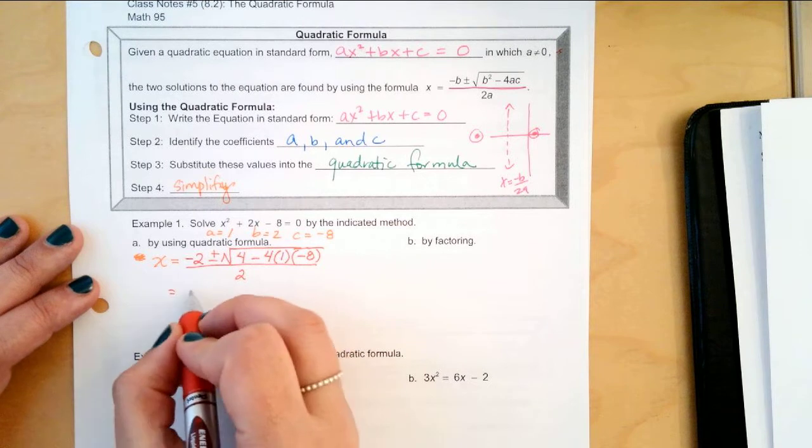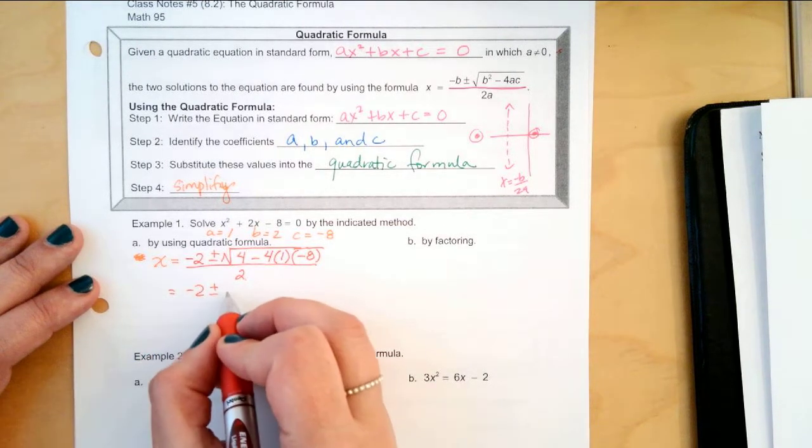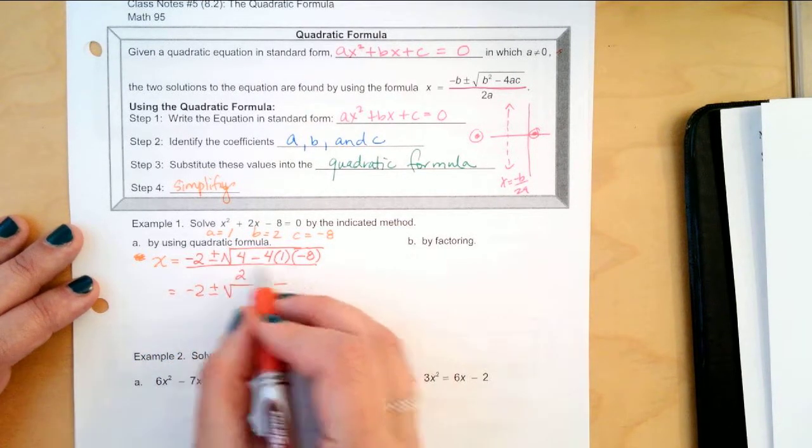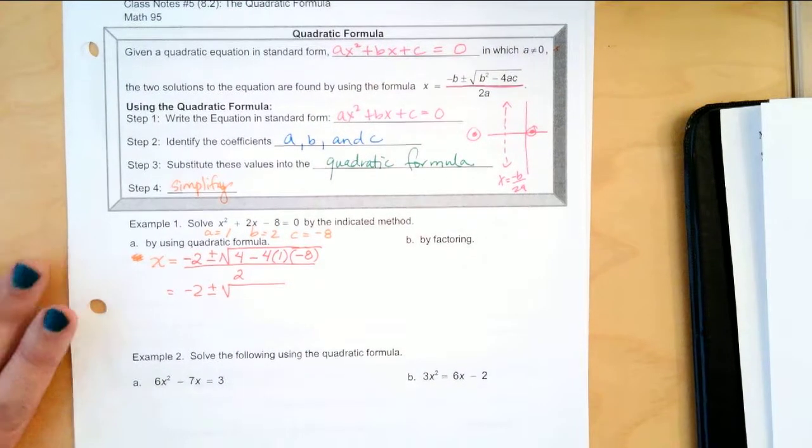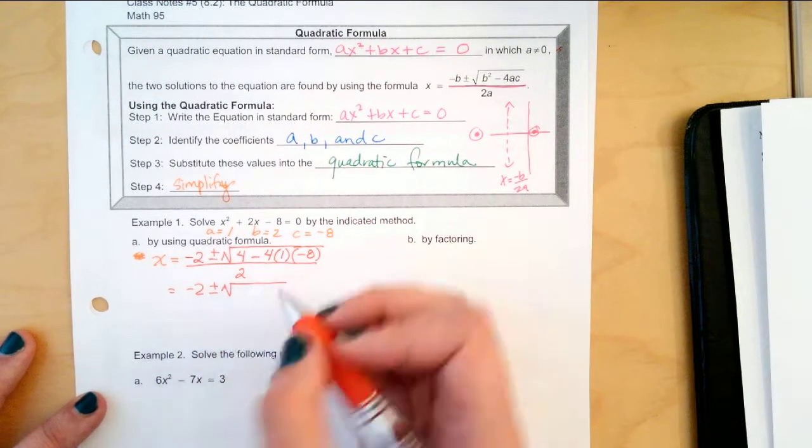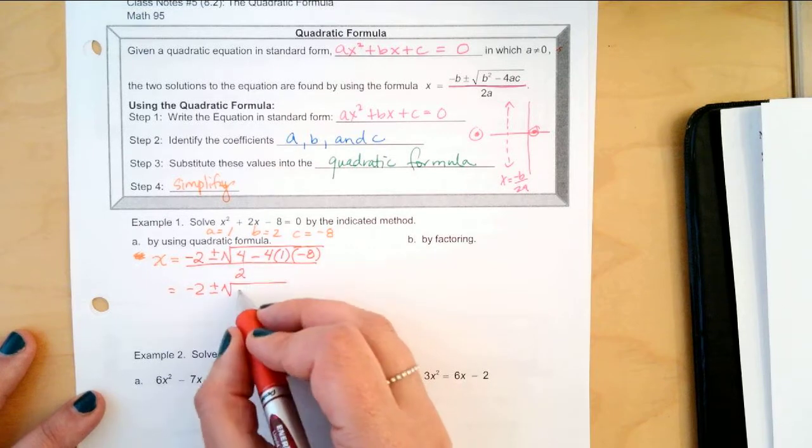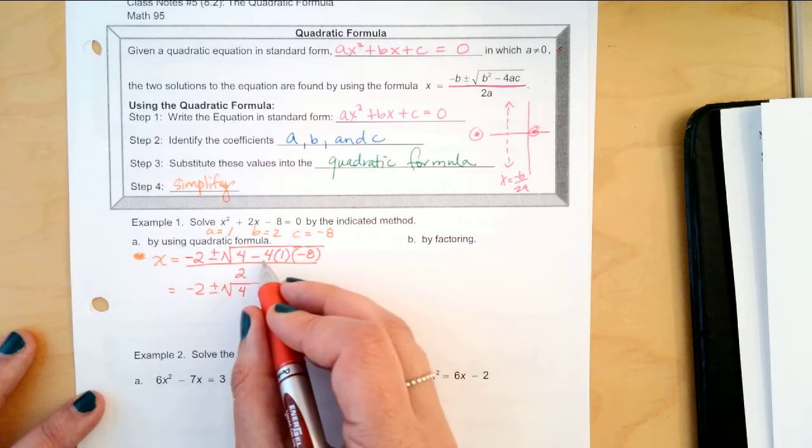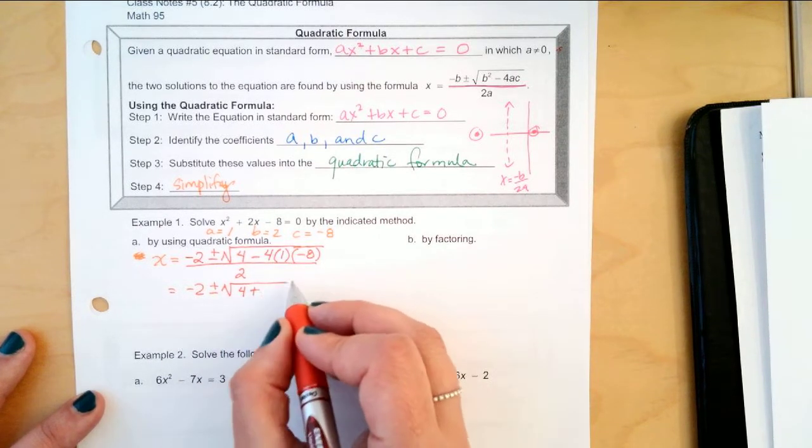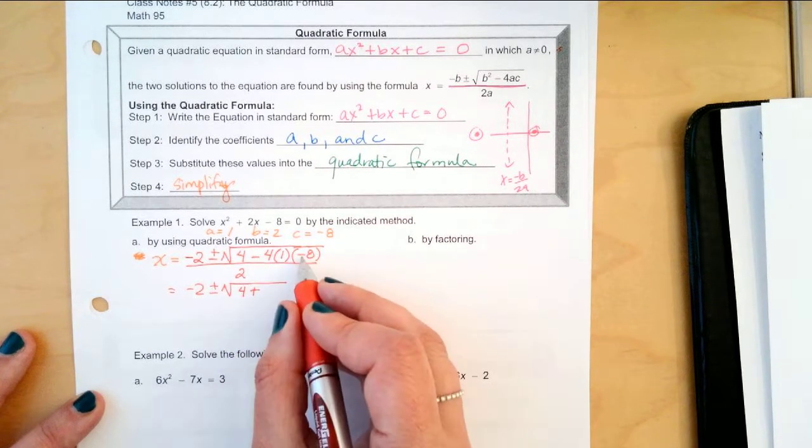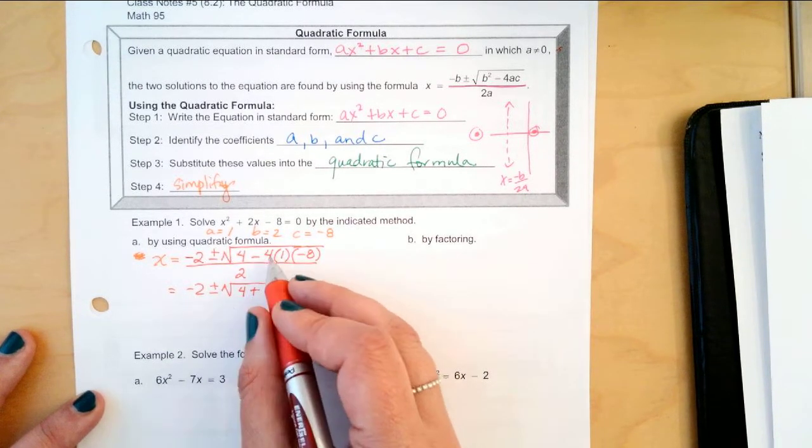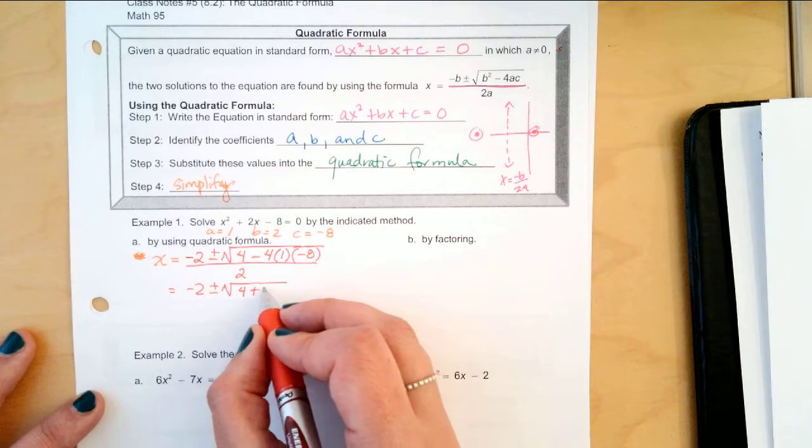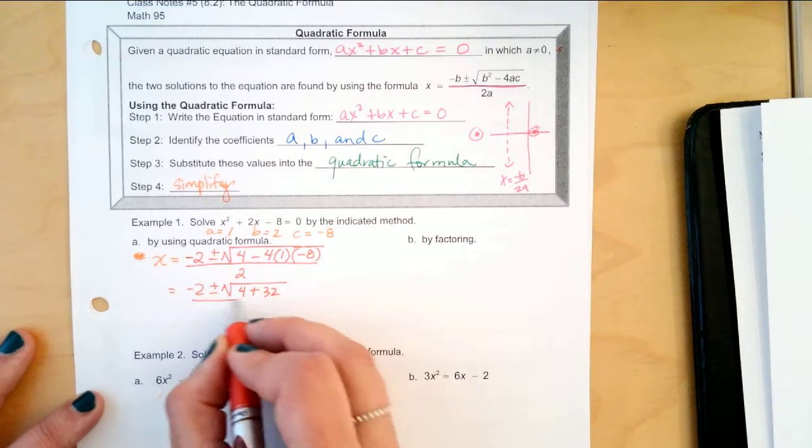Okay, negative 2 plus or minus the square root. We're simplifying now. So, what do I get on the inside of my radical? 4 plus, why do I have a plus? Because a negative times a negative is a positive. 4 times 8 times 1 is 32 over 2.